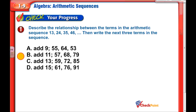Now, what kind of relationship do we have here? We start with 13, then go to 24, 35, and 46, and we need to write the next three terms. My favorite way to figure this out is to take any two numbers — I'll take 24 and 13 — and subtract to find the difference.